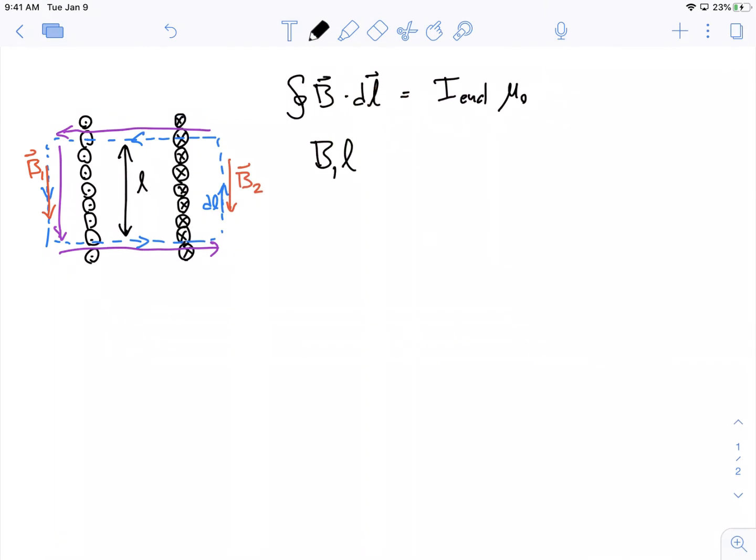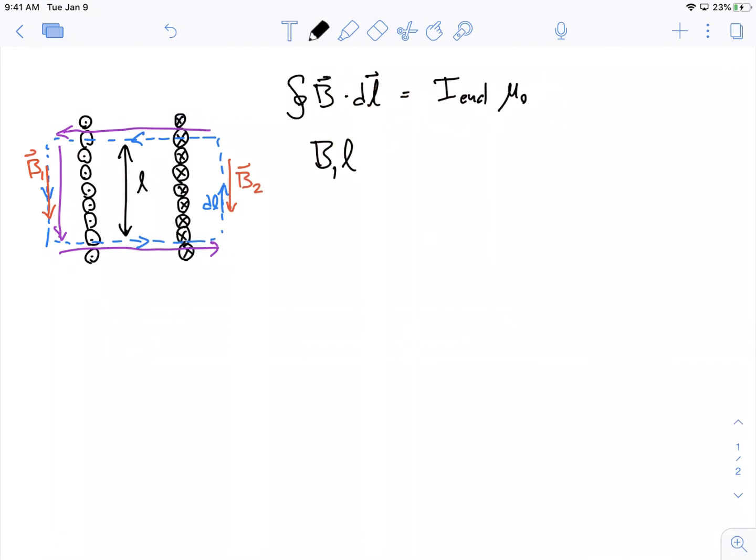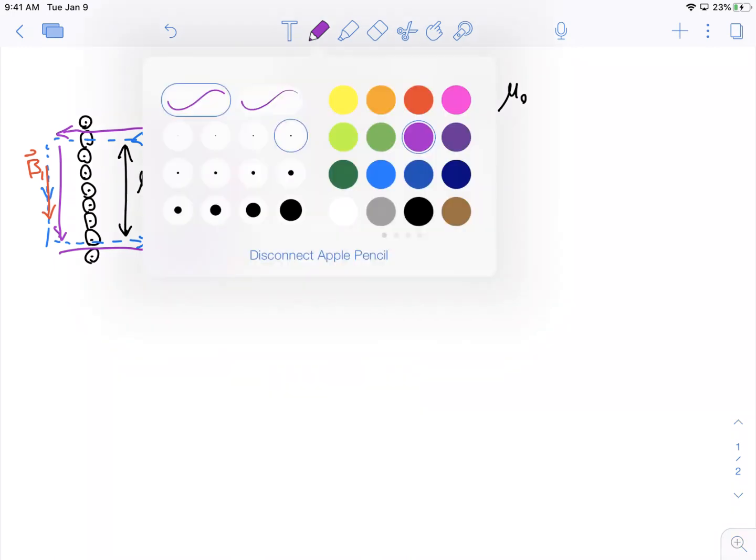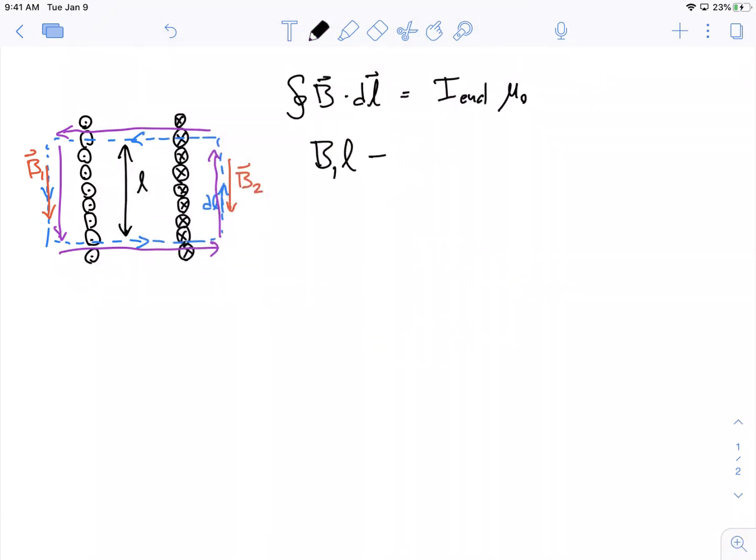So, it's B1 times L. On the other side, on this leg of the journey, we see DL and B are in opposite directions. So, the dot product, B dot DL, and then the integral of the DL, picks up a negative sign. So, we actually get minus B2 L.